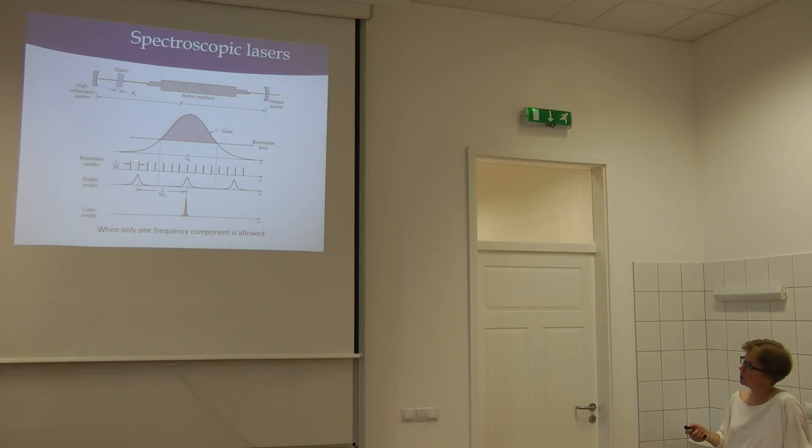This is what I told you at the beginning that depending on the total length of the system D, the separation between the lines is given by the speed of light divided by twice the distance between two mirrors. This is because you want to produce standing waves in it.